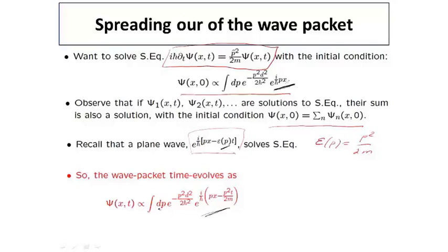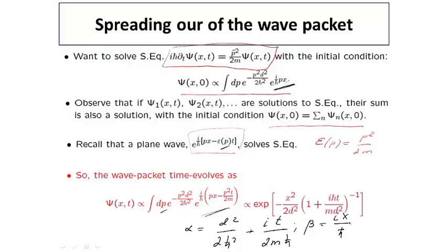And it can be done again using the same identity that we used in the previous slide, but now the parameter alpha here is going to be d squared over 2h bar squared plus it divided by 2m h bar. And the parameter beta now is ix over h bar. So again, if we use the same identity, what we get is the following expression for the wave function. We see that this expression is intrinsically complex function, but if we're interested just in determining the density of our particle, where the particle is located, the only thing which matters, as I mentioned already, and we'll discuss it in more details a little later, is the absolute value of the wave function squared.